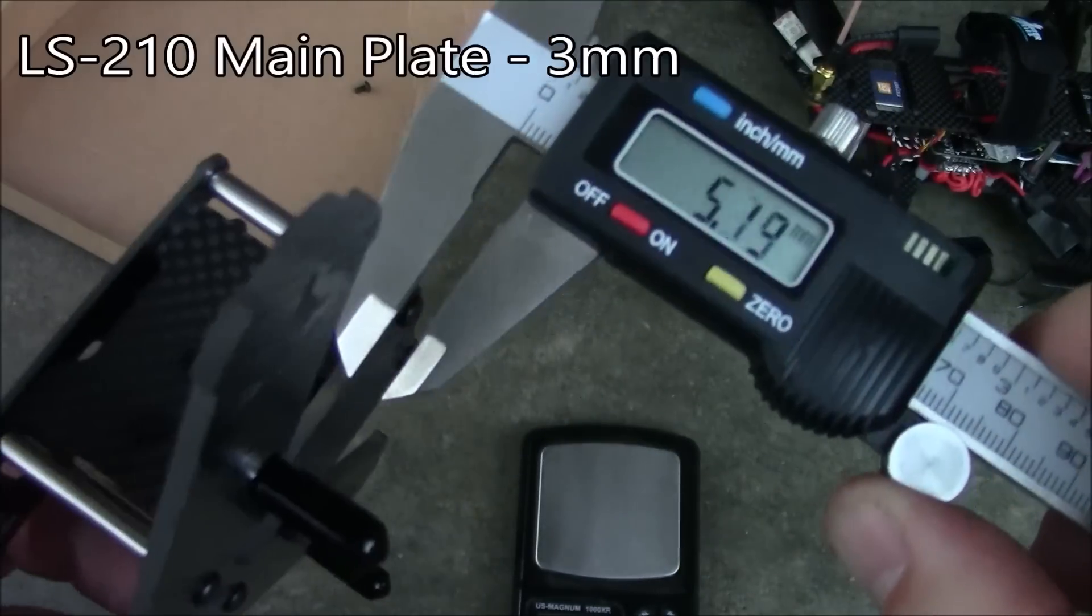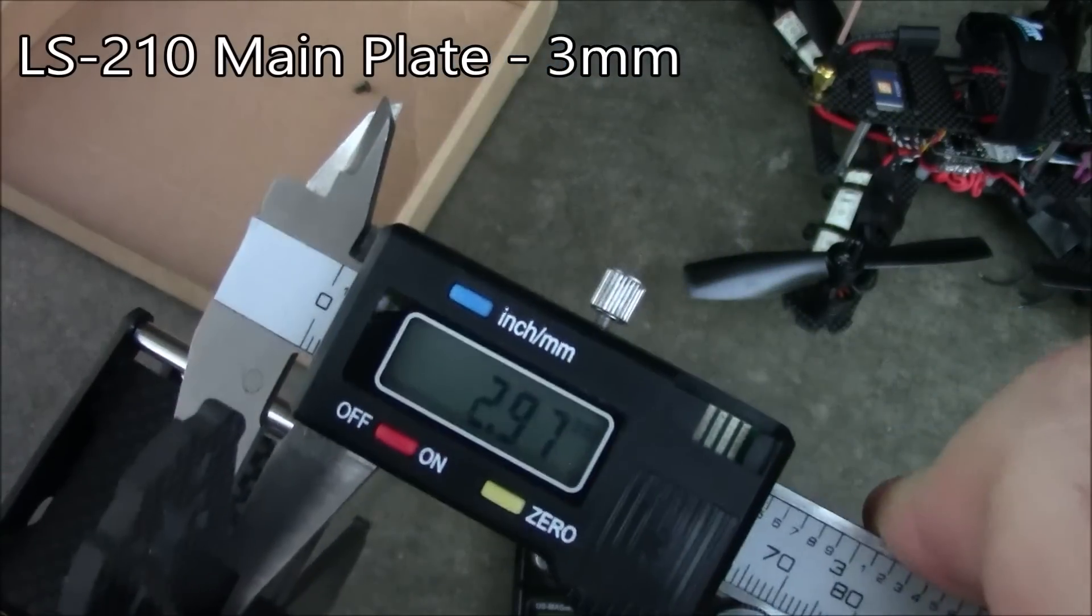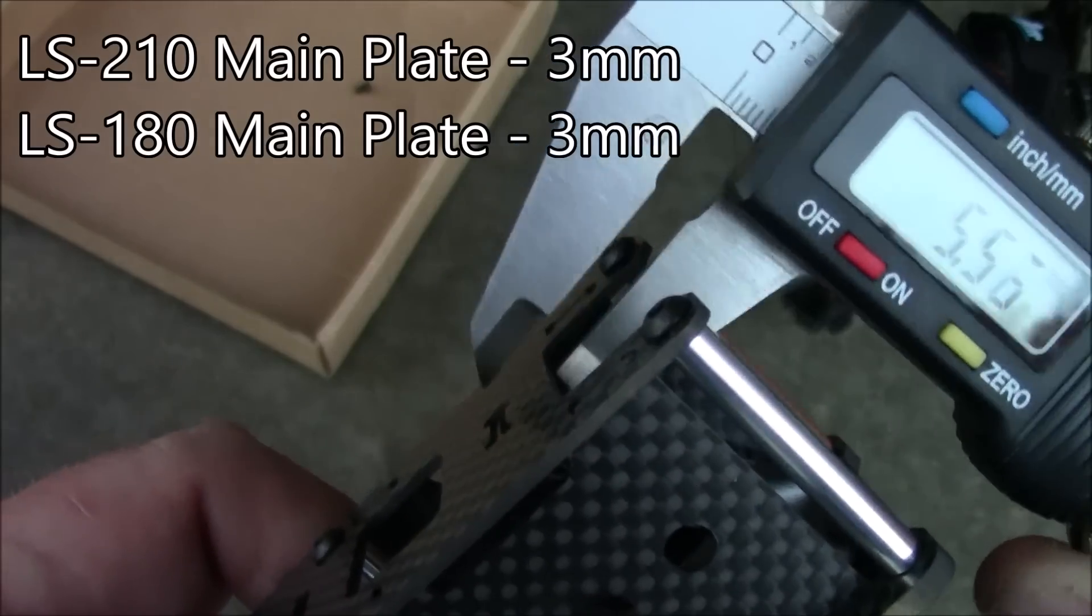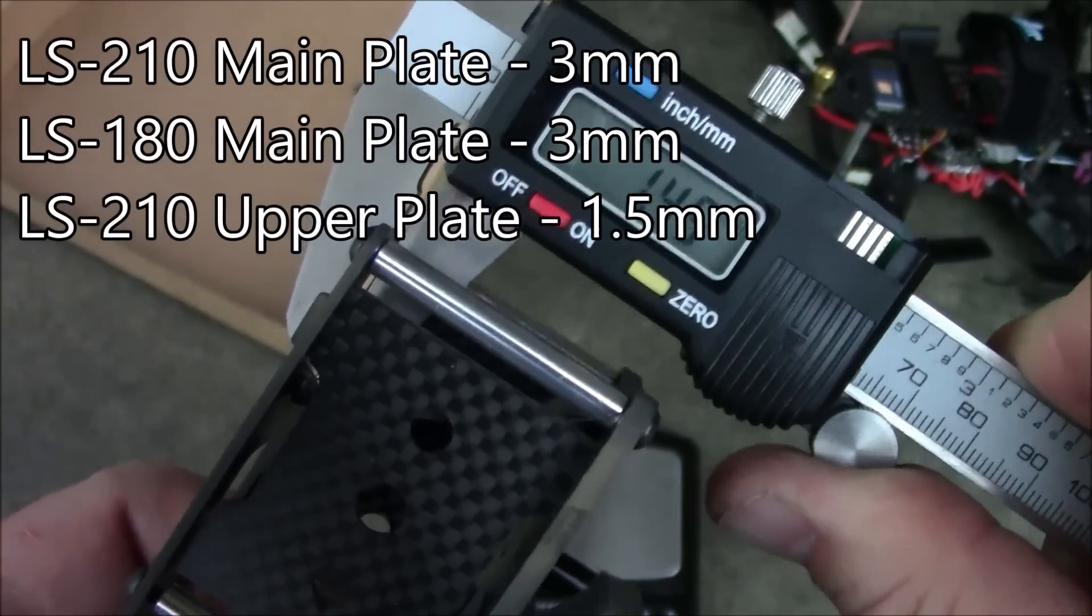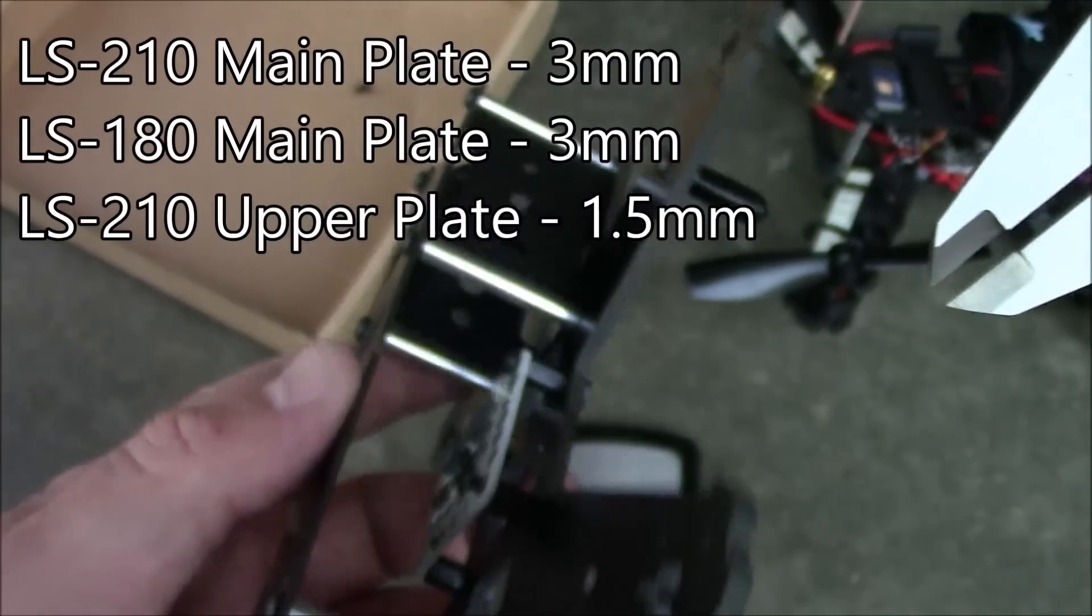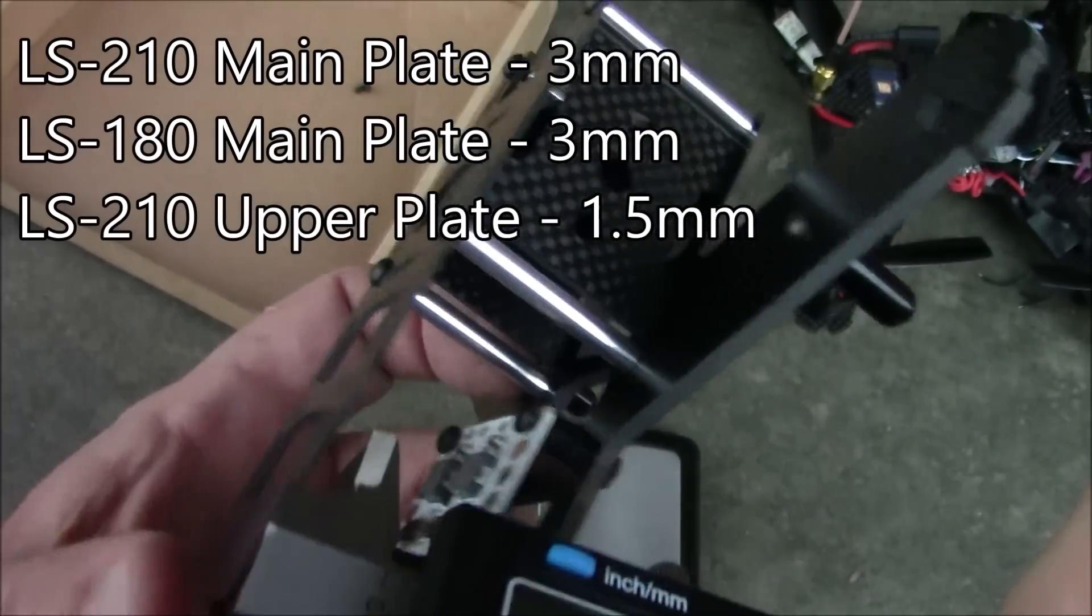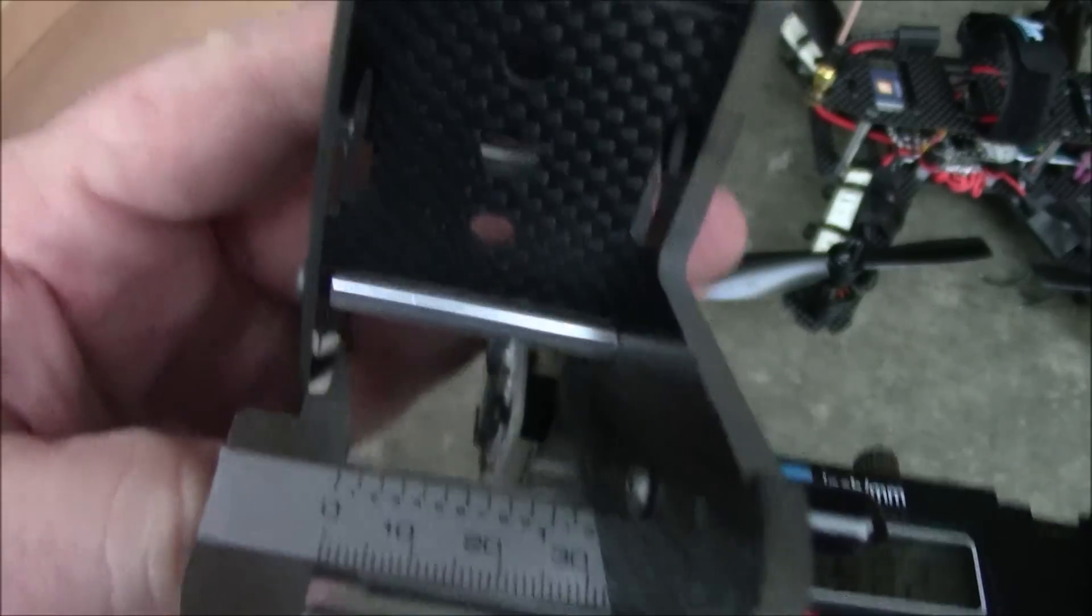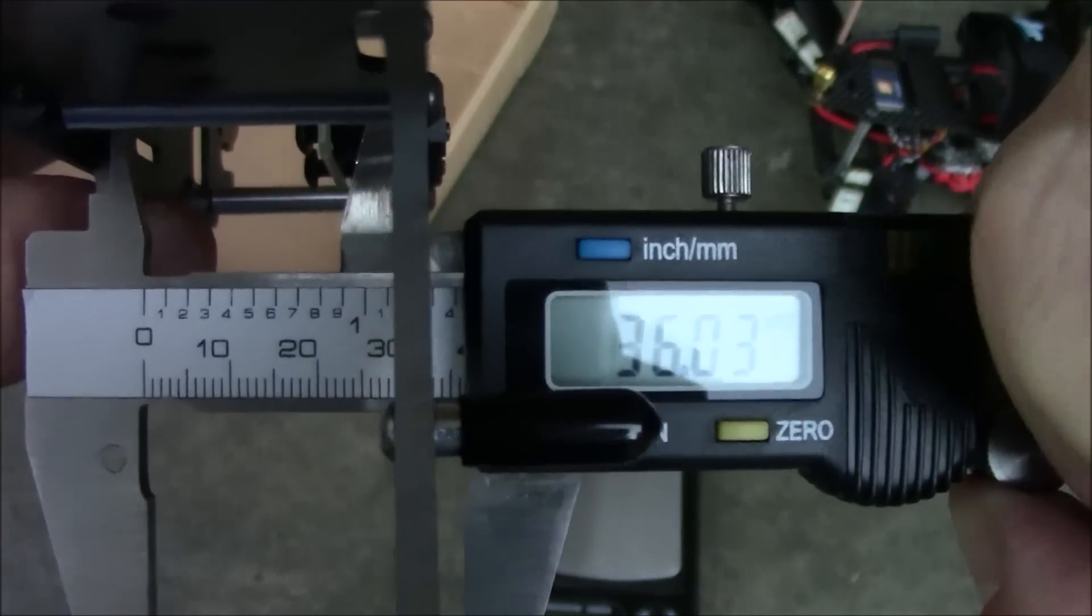The LS210 had three millimeter main plate and this one has, surprise surprise, three millimeter main plate. The upper plate comes in at one and a half. That's pretty good. Better than one. And the space in between these two here. Let me get this put on here.